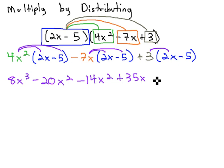Finally, distributing 3 through gives us plus 6x, and 3 times negative 5 is negative 15.